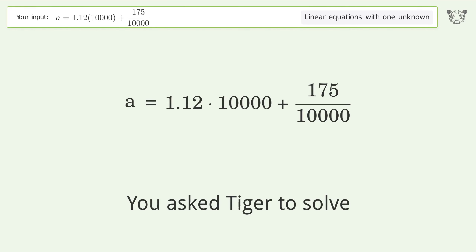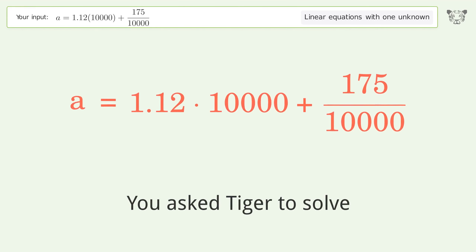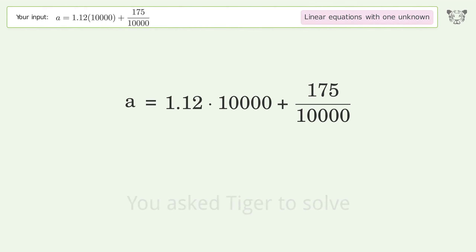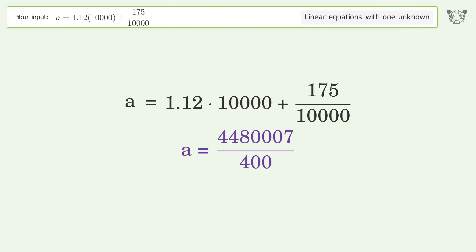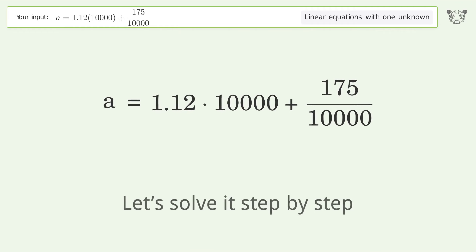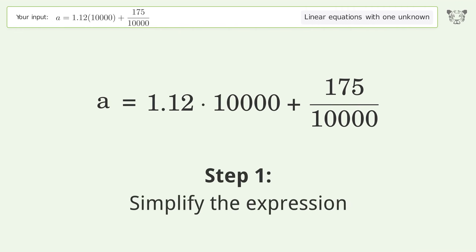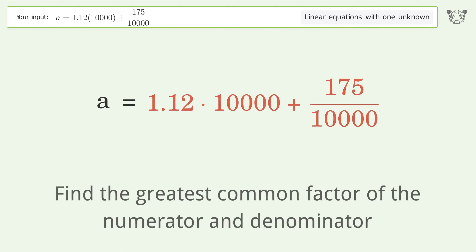You asked Tiger to solve this — it deals with linear equations with one unknown. The final result is a equals 4,480,007 over 400. Let's solve it step by step: simplify the expression, find the greatest common factor of the numerator and denominator.